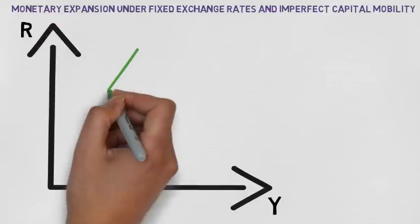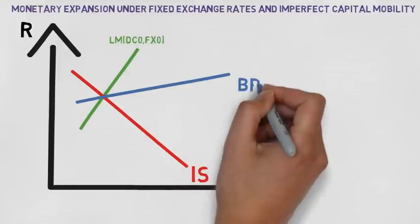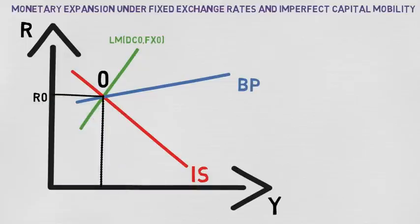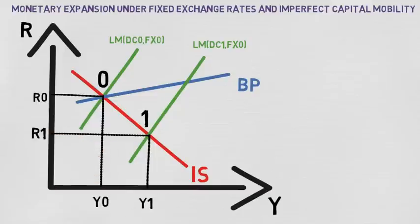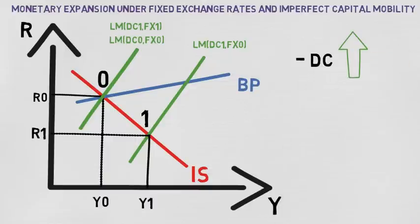Lastly, let's look at a monetary expansion under fixed exchange rates with imperfect capital mobility. From starting position zero, there is an increase in domestic credit from DC0 to DC1, leading to a shift right in LM from LM_DC0_FX0 to LM_DC1_FX0, and we move to point one with a fall in interest rate from R0 to R1 and an increase in income from Y0 to Y1. The fall in interest rate should cause the domestic currency to depreciate, but instead the central bank intervenes by buying domestic currency and selling foreign reserves, so FX falls from FX0 to FX1. This causes the LM curve to shift back from LM_DC1_FX0 to LM_DC1_FX1, and we return to point zero. So under a fixed exchange rate regime, a monetary expansion has no effect on the interest rate or income — it only affects the composition of money supply, with an increase in domestic credit and a decrease in foreign reserves.